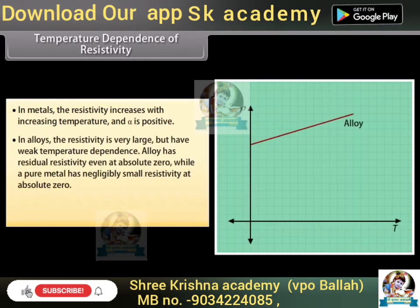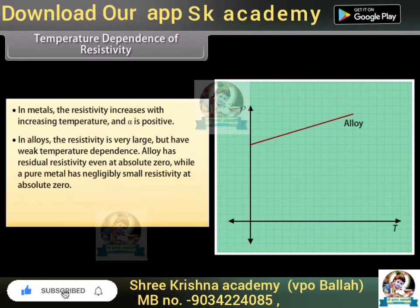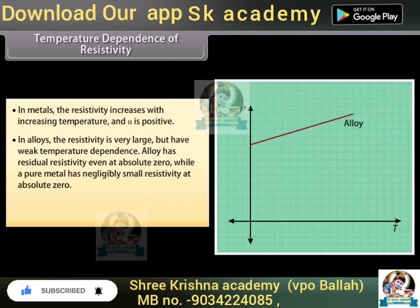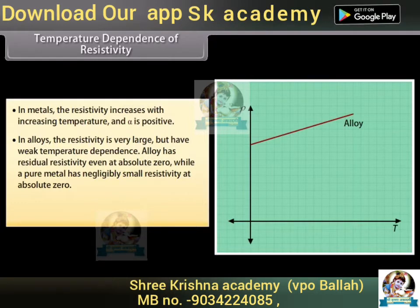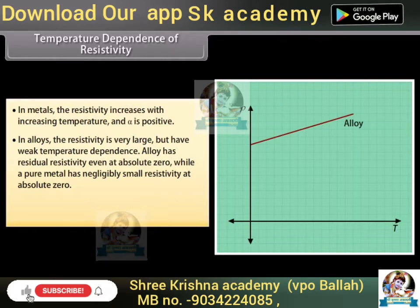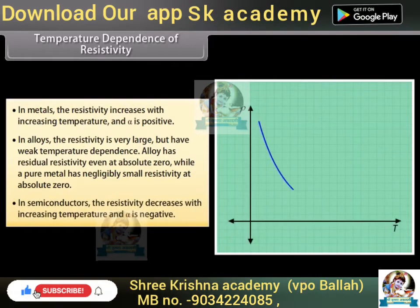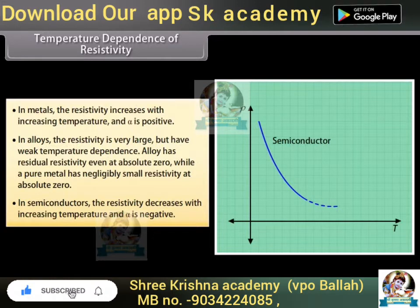In alloys, the resistivity is very large but has weak temperature dependence. An alloy has residual resistivity even at absolute zero, while a pure metal has negligibly small resistivity at absolute zero. In semiconductors, resistivity decreases with increasing temperature and alpha is negative.